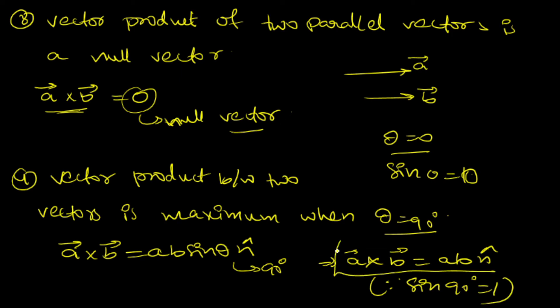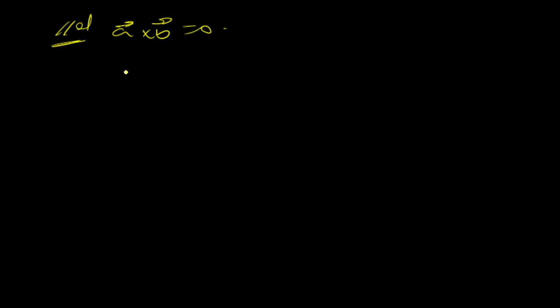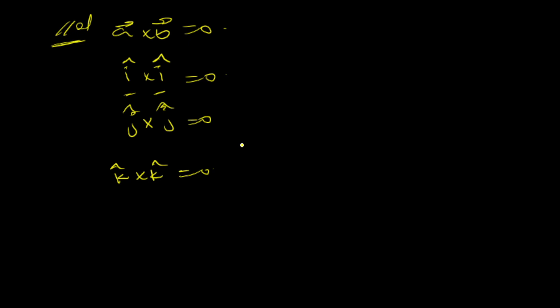The vector product of a vector will equal AB n-cap at maximum. Also, since the vector product of two parallel vectors is zero, the vector product of two identical unit vectors is also zero. Therefore: i-cap cross i-cap = 0, j-cap cross j-cap = 0, and k-cap cross k-cap = 0.